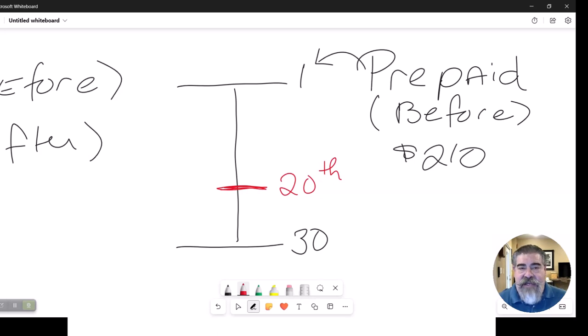So what happens in a scenario where it has to be prorated is the fact that the seller owned the property on the first, but he paid for 30 days of usage because the bill showed up at his house and said, before you use this item, you must pay $210. So the seller prepaid the $210 for all 30 days. But he only used it 20 days.